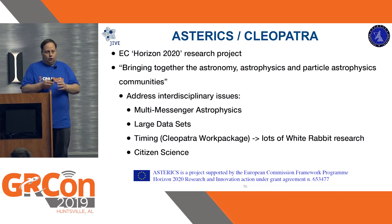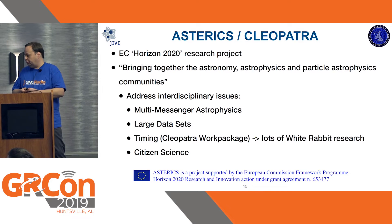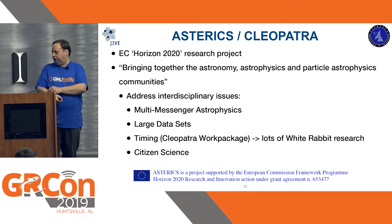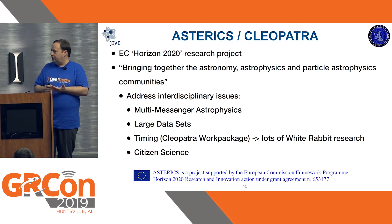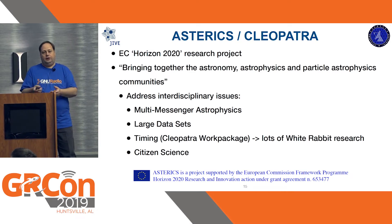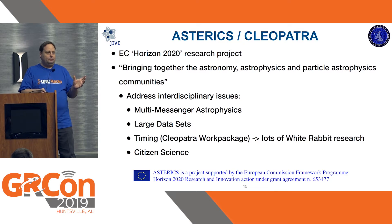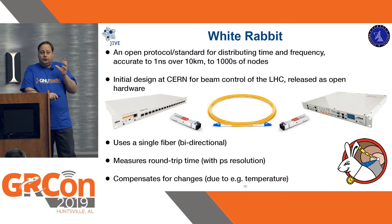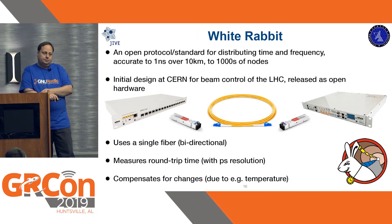This is a half-hobby, half-work project, and for the work side we got involved in a project called ASTERICS — a European Commission Horizon 2020 project — whose aim was to address interdisciplinary issues in astronomy, astroparticle physics, and particle physics. One field all these observatories suffer from is accurate timing, and White Rabbit is a very interesting solution. We were going to show that White Rabbit as a time and frequency reference distribution is good enough for VLBI — almost as good as a hydrogen maser clock.